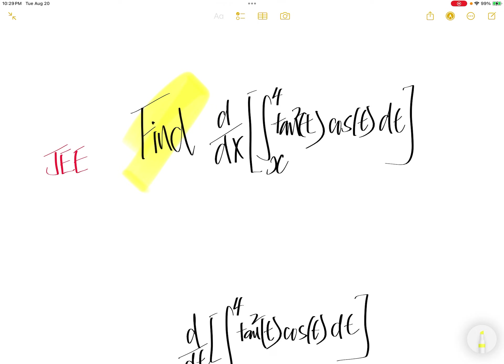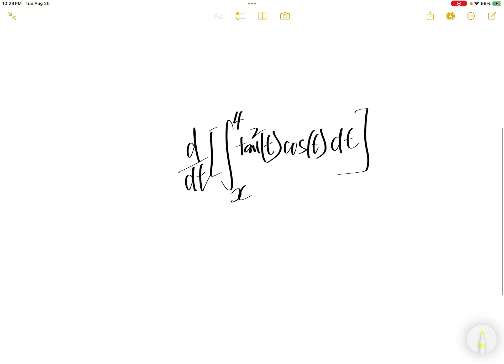Find the derivative with respect to x of the integral of tangent t cos t, where t goes from x to 4.